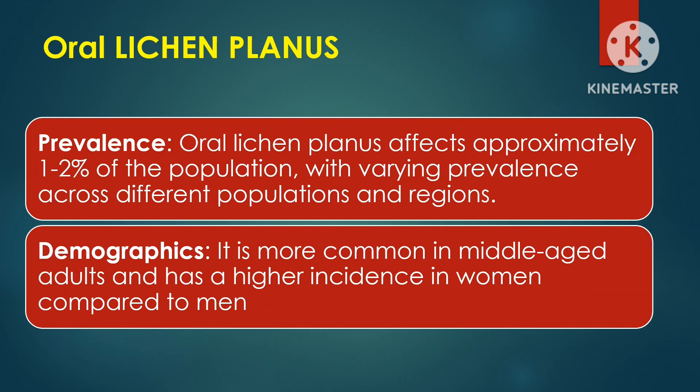In contrast to leukoplakia, lichen planus also affects 1-2% of the population, with a slightly higher incidence in women compared to men. This autoimmune condition typically develops in middle-aged adults. Unlike leukoplakia, lichen planus is not strongly associated with lifestyle factors such as smoking or alcohol use. It can also affect other parts of the body, including the skin, genital mucosa, and nails.